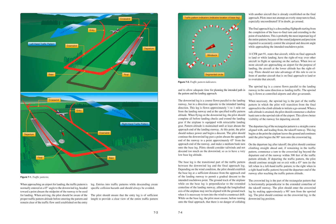When a safe altitude is attained, the pilot should commence a shallow bank turn to the upwind side of the airport. This allows better visibility of the runway for departing aircraft. The departure leg of the rectangular pattern is a straight course aligned with and leading from the takeoff runway. This leg begins at the point the airplane leaves the ground and continues until the pilot begins the 90-degree turn onto the crosswind leg. On the departure leg after takeoff, the pilot should continue climbing straight ahead and, if remaining in the traffic pattern, commence a turn to the crosswind leg beyond the departure end of the runway within 300 feet of the traffic pattern altitude.